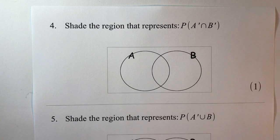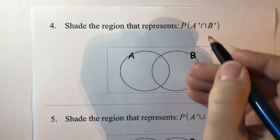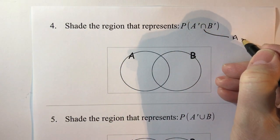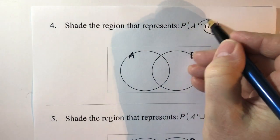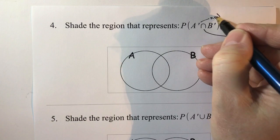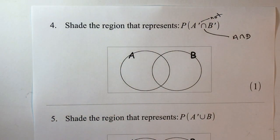So in this particular case we've got shade the region that represents the probability of not A and not B. If you remember in the previous video this here I remember as and. This little dash here means not, so it's not A and not B.